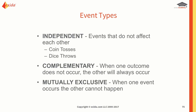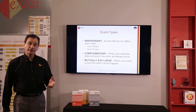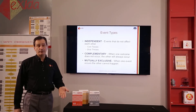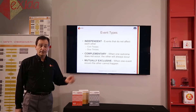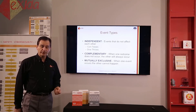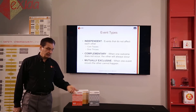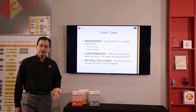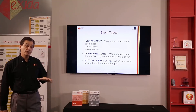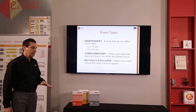Mutually exclusive: when one event occurs the other cannot happen. Same with the coin — if we get a head we can never get a tail. If we roll a die and get a one, we know we're not going to get a two, three, four, five, or six. These are mutually exclusive.